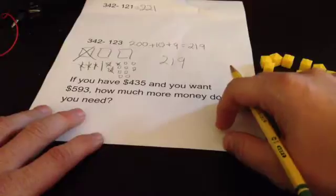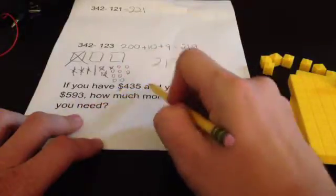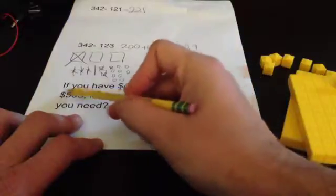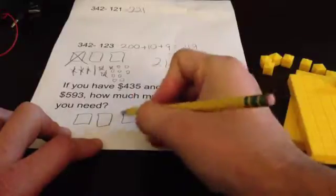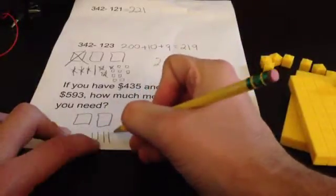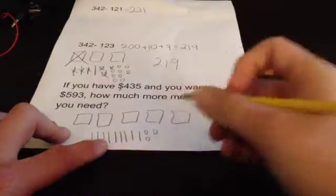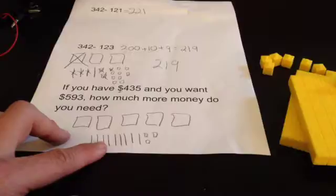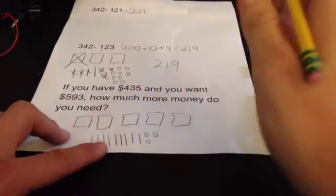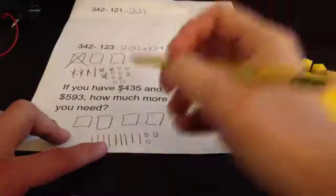Let's try one more as a story problem. If you have $435 and you want $593, how much more money do you need? So I'm going to say, I want 593. That's 100, 200, 300, 400, 500. 10, 20, 30, 40, 50, 60, 70, 80, 90, 91, 92, 93. Now I know I already have 435, so I don't have to worry about that. I've already got it. I'm going to get rid of the 435. I already know I've already saved that much. I want to find out how much more I need. Whatever, after I get rid of 435, whatever I'm left with is how much I'm going to need.